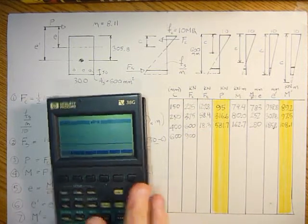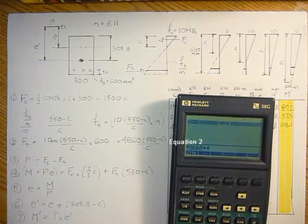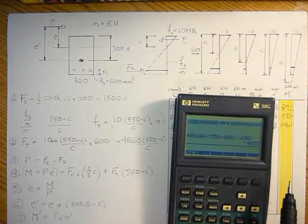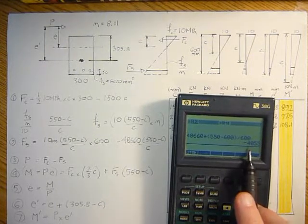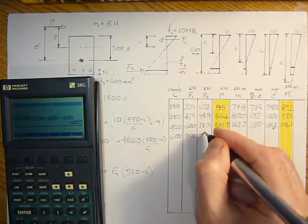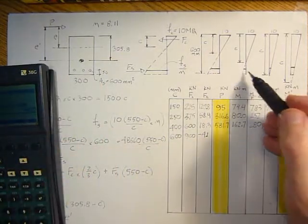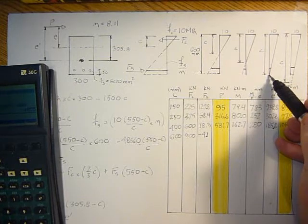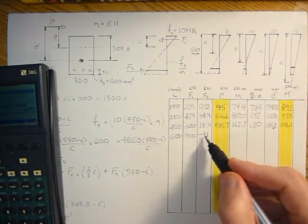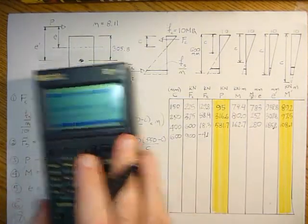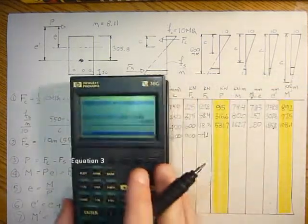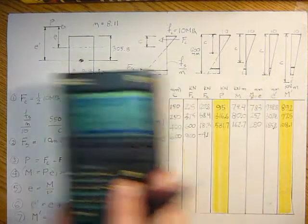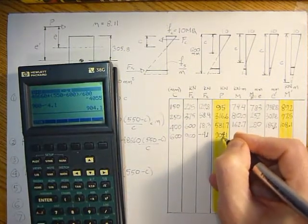And the force in the steel is going to be 48660 times 550 minus 600 divided by 600, and that is minus 4.1 kilonewtons. And the reason why it's minus is because in the previous cases, the neutral axis was above the steel, and now the neutral axis is below the steel. So that puts the steel into compression, so it's minus 4.1. And then we take 900 minus minus 4.1 from this equation here, so that would be 900 minus negative 4.1, which is 904.1 kilonewtons.